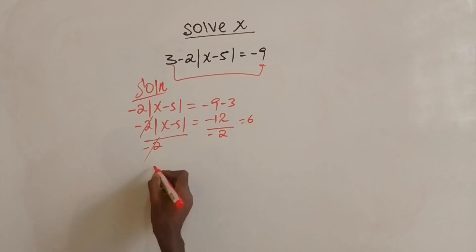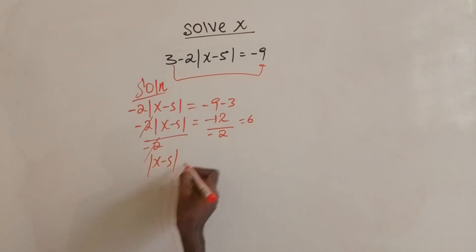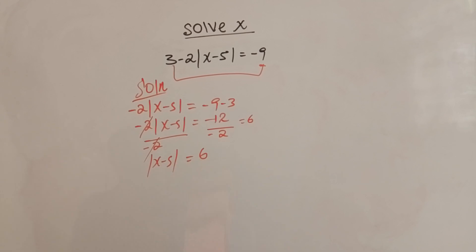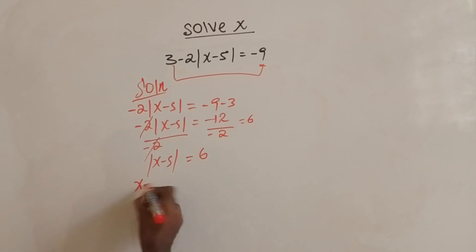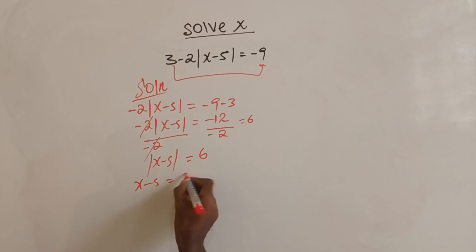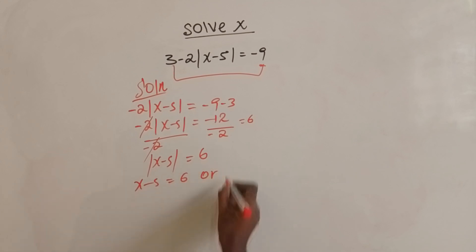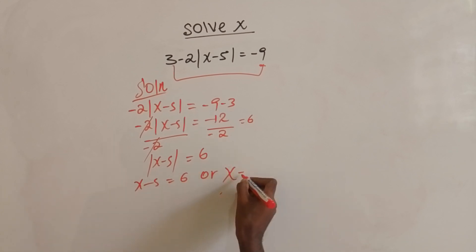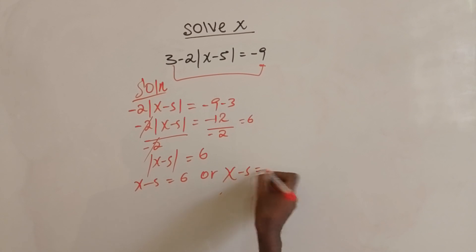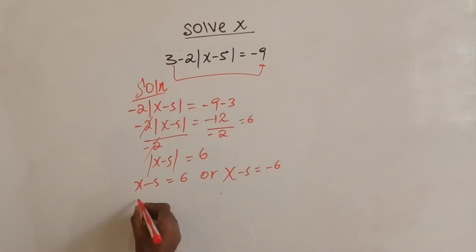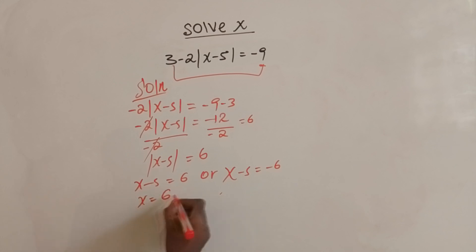So the absolute value of x minus 5 is equal to 6. Here we will have two solutions. Either x minus 5 equals 6, or x minus 5 equals negative 6.